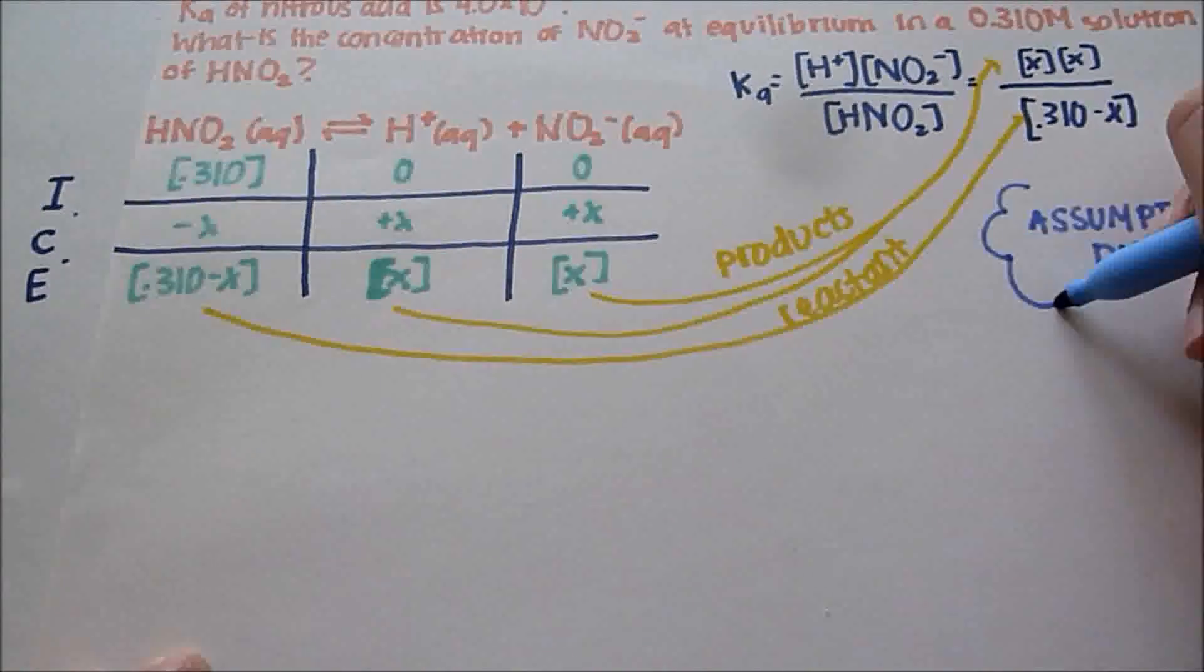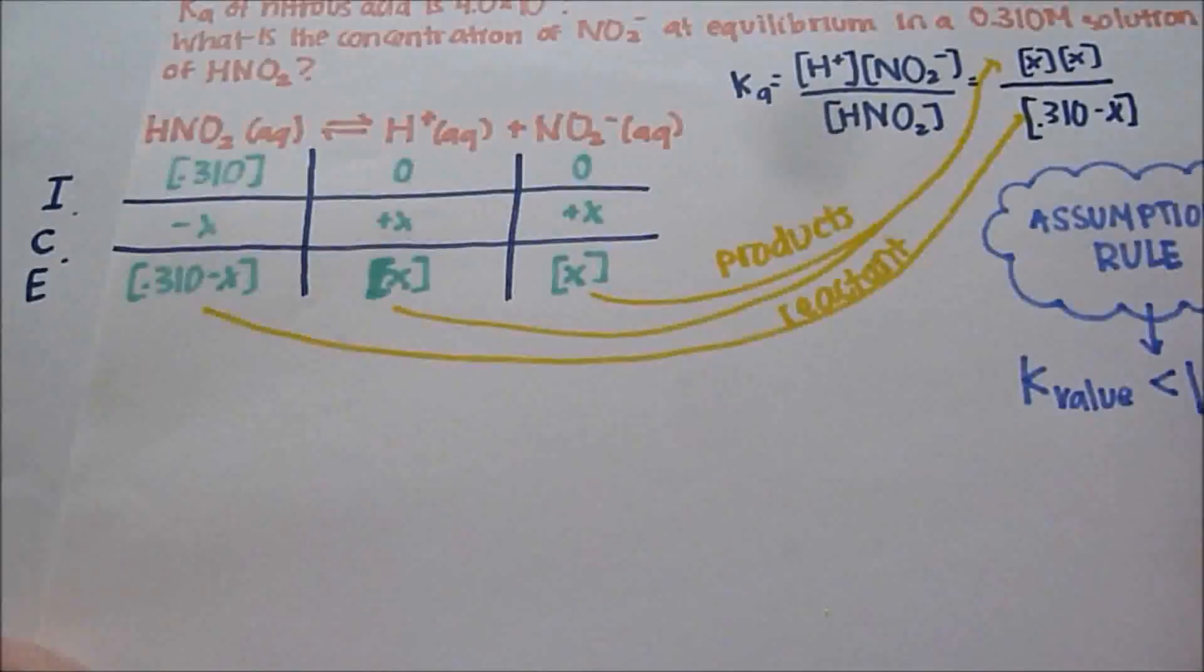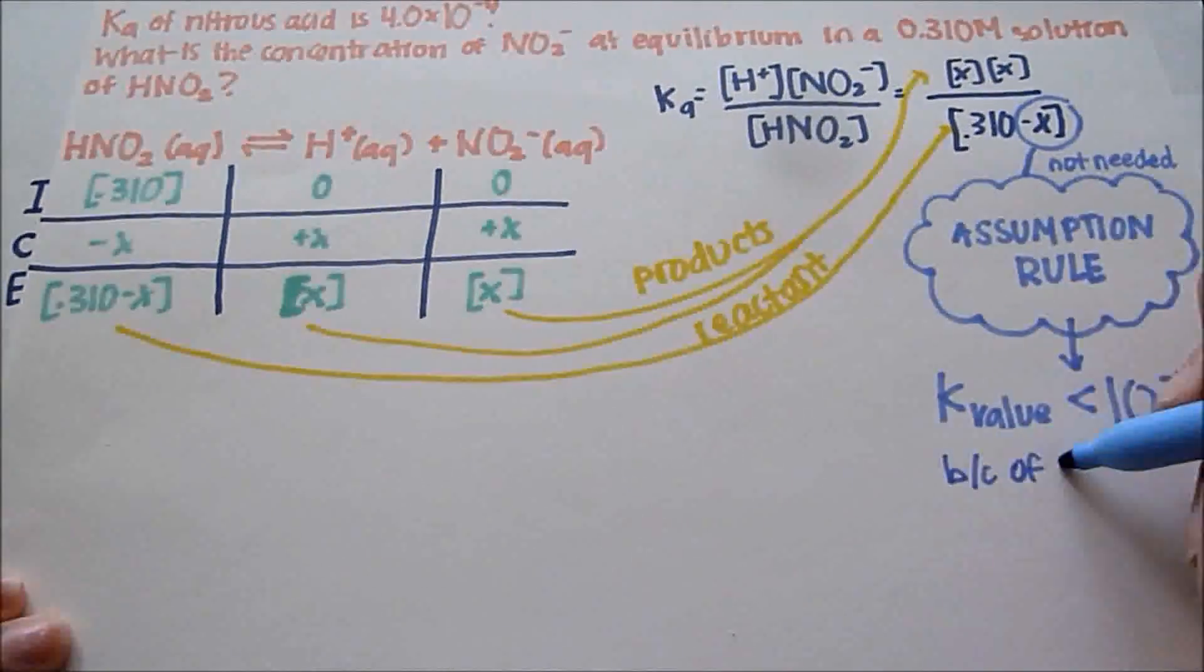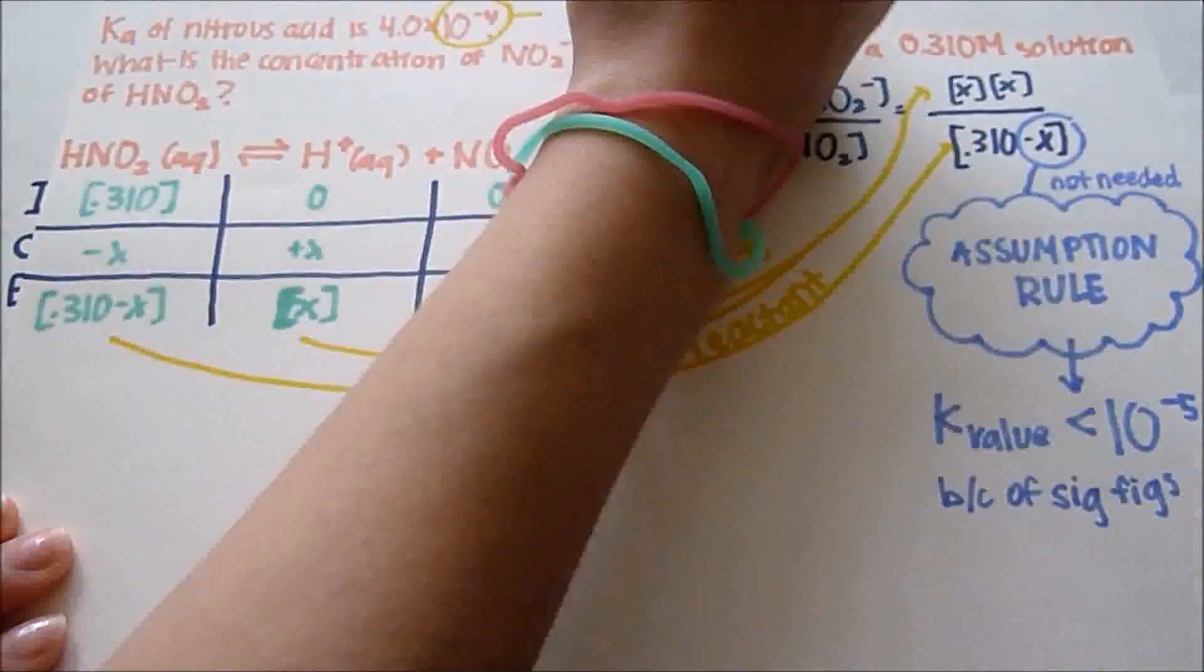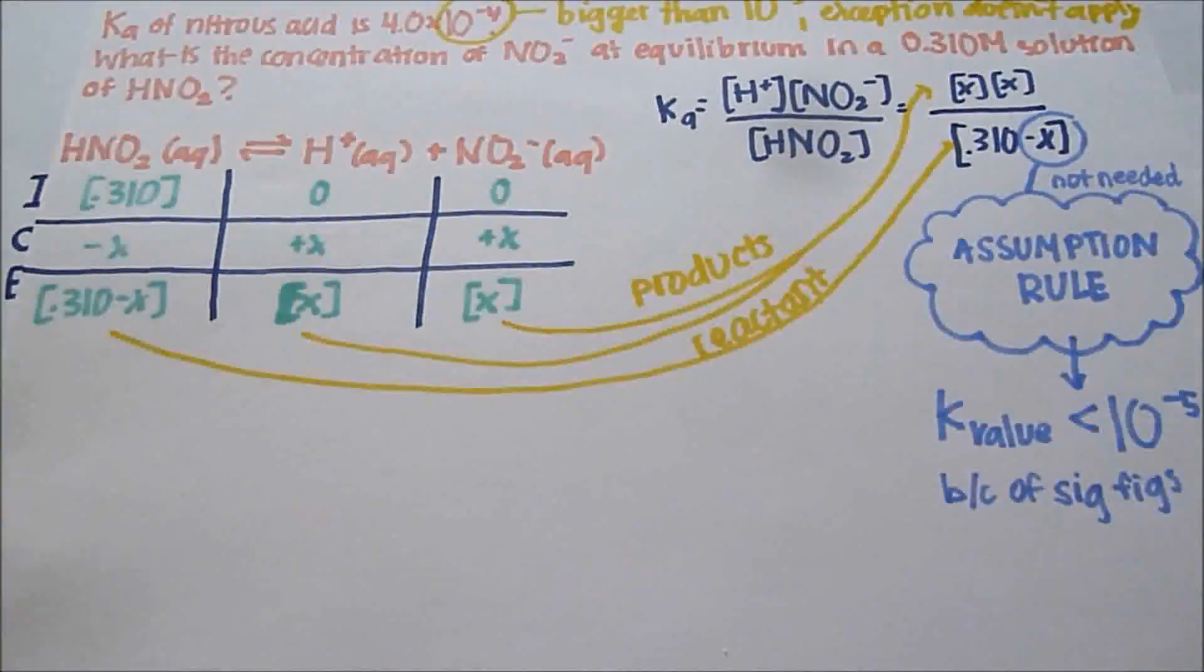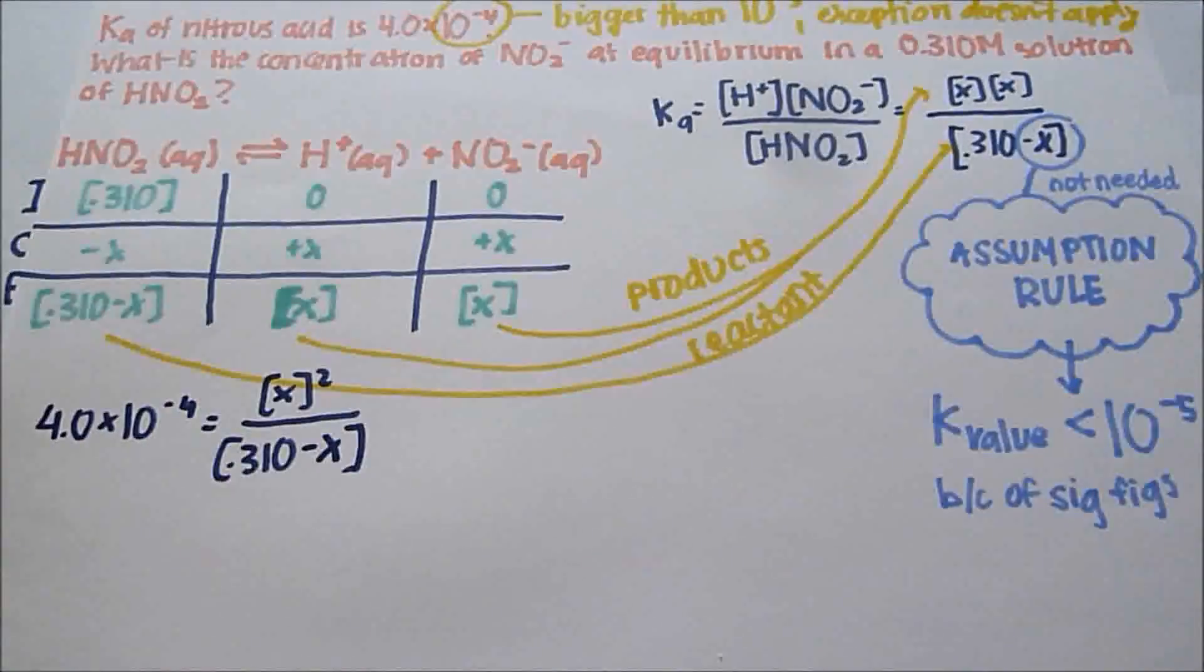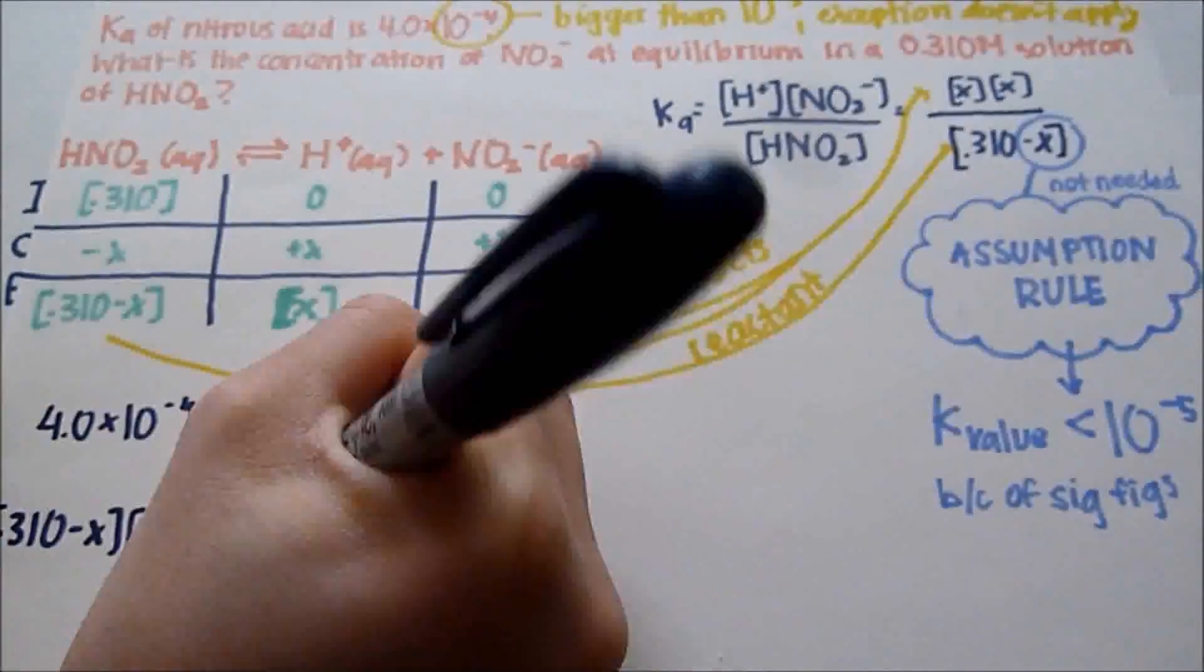Also, there's this amazing assumption rule that can make your life so much easier. It basically says that if K is less than 10 to the negative 5th, then you can take out the X on the bottom. And this is because of the sig figs. But, because in this problem it's not bigger than 10 to the negative 5th, this doesn't apply, sadly enough.